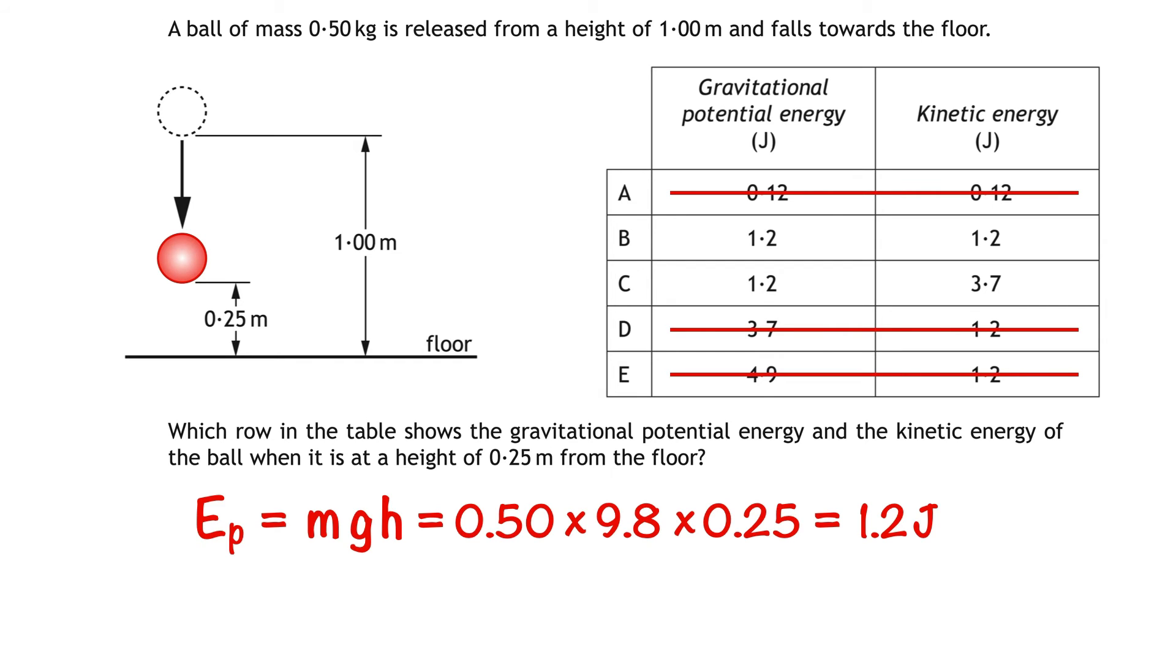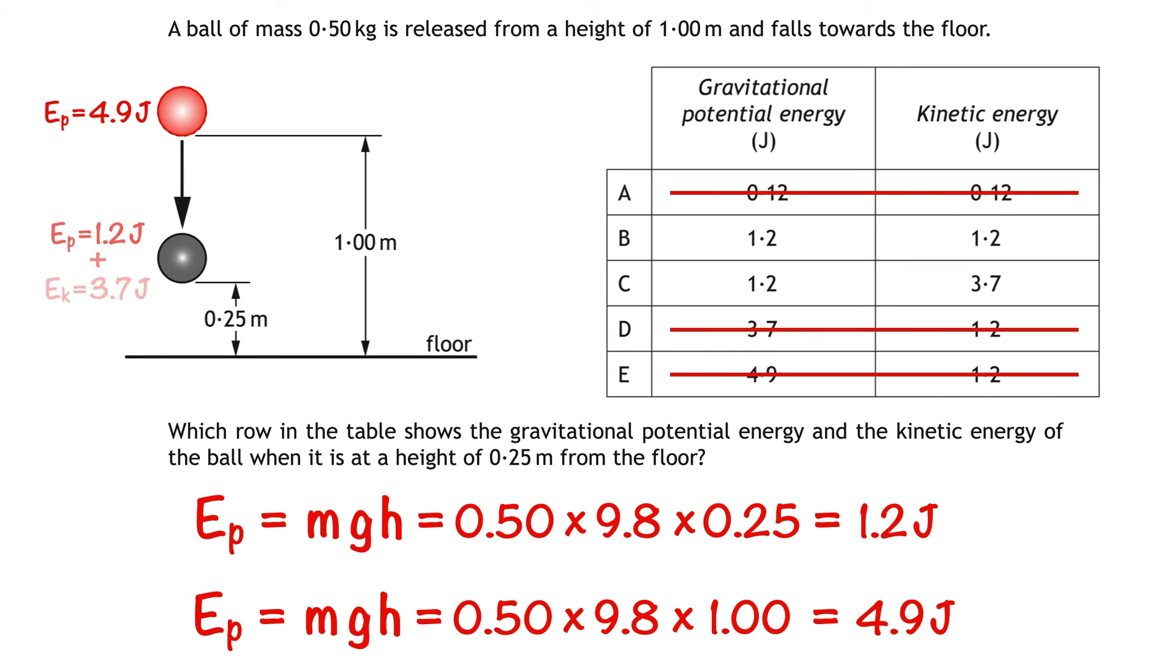We don't know the speed of the ball at this position so we can't use the equation E_k is half mv squared to calculate its kinetic energy. We can work it out another way though. First we can calculate the gravitational potential energy of the ball at a height of one meter above the floor using the same equation as before. That gives us 0.50 times 9.8 times 1.00 which is 4.9 joules. So if the ball has 4.9 joules of potential energy when it's one meter above the floor it must have a total of 4.9 joules of energy when it's 0.25 meters above the floor except some of the potential energy will have been converted to kinetic energy. We already calculated that at 0.25 meters above the floor the ball has 1.2 joules of potential energy so the rest of that 4.9 joules must have been converted to kinetic energy. We can calculate how much by subtracting 1.2 from 4.9 giving a value of 3.7 joules. That means our answer is C.